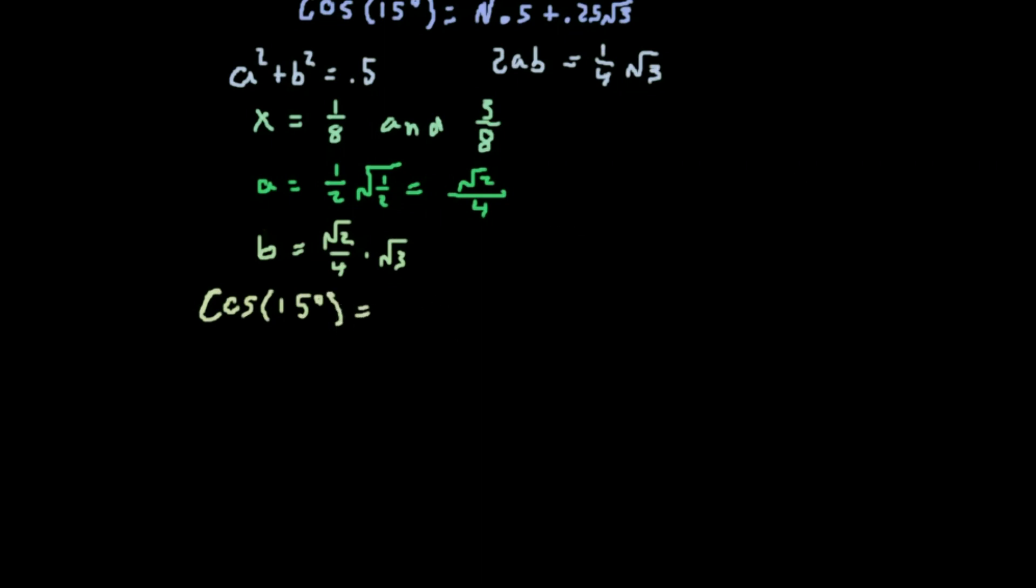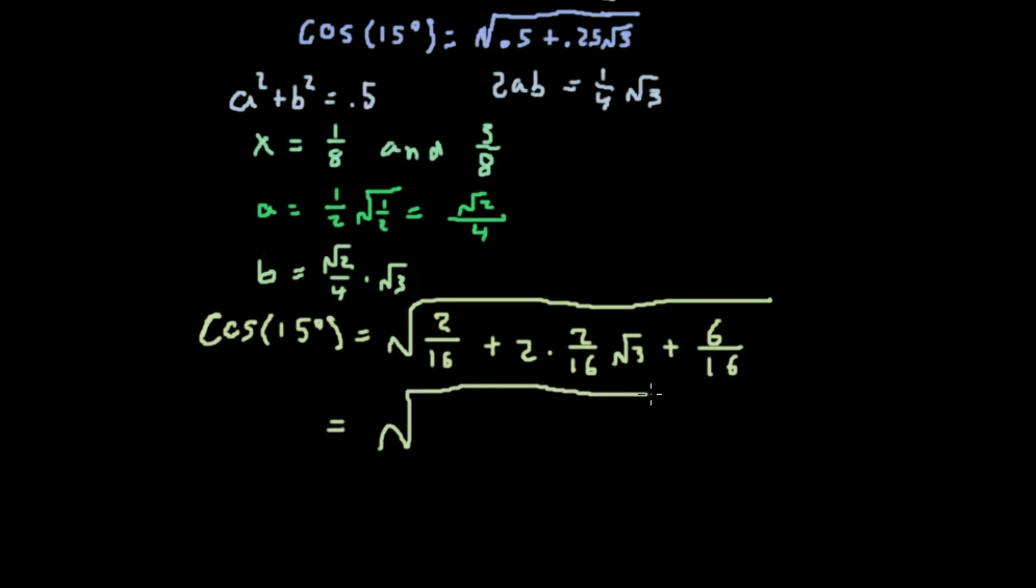So now we have the cosine of 15 degrees is a squared plus 2ab plus b squared, which is the same thing as 2/16 plus 2 times 3/16 root 3 plus 6/16. We can factor this into the square root of 2 over 4 plus the square root of 6 over 4. Those are the values of a and b that we just solved.